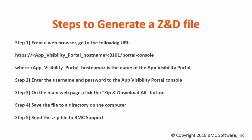The steps to generate a zip and download file are as follows. Step 1: From a web browser, go to the following URL, where app_visibility_portal_hostname is the app visibility portal server name.